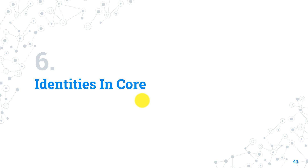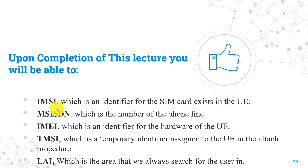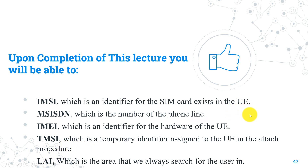Let's now start the chapter. Upon completion of the chapter you will learn: IMSI is the SIM card identifier, MSISDN is the number of the subscriber, IMEI is the user equipment identifier, TMSI is a temporary identifier for each user, and finally LAI which is the location identifier. We have three types of identities in our network: the first one is user identities, second one is equipment identities, and third one is network identities.